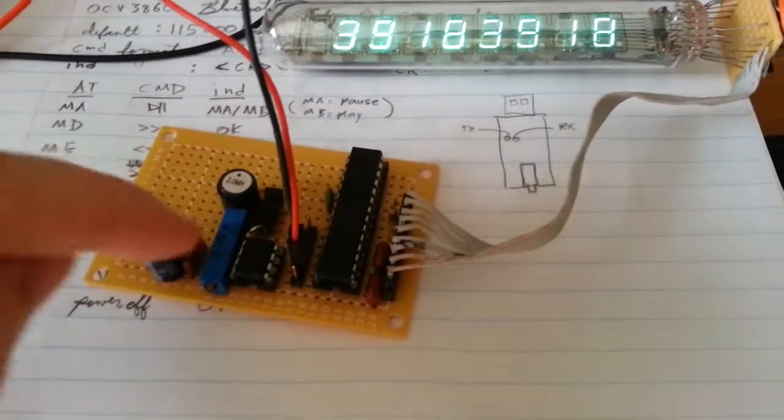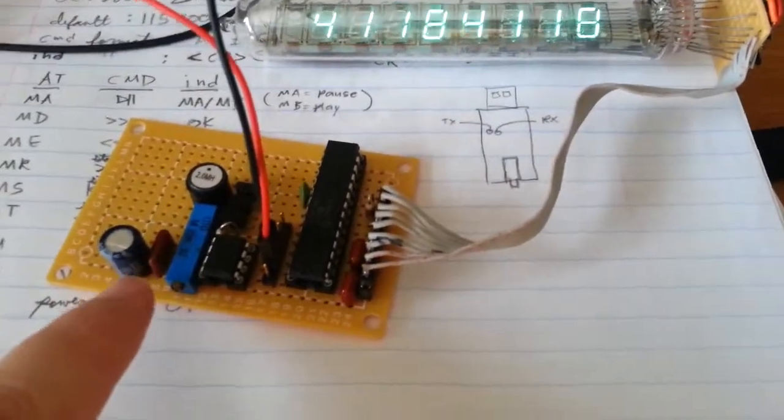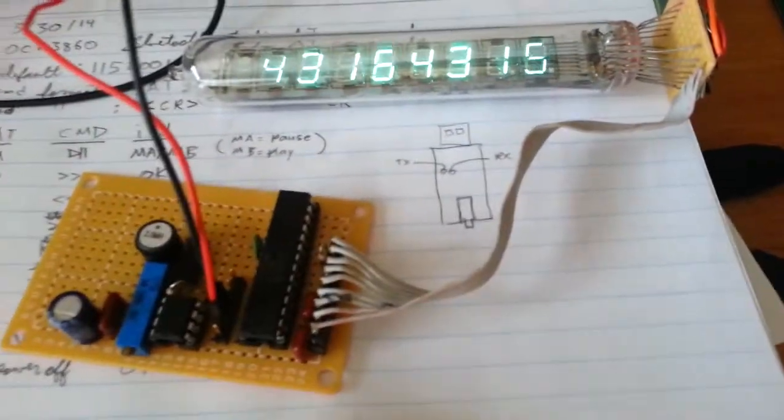This is the boost regulator circuitry in there. This guy's the inductor, that guy's the output capacitor. This is the input filter capacitor for the entire 5 volt logic and everything.